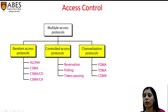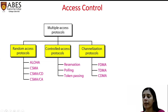In lecture four, we will discuss the various access control protocols, categorized into three categories: random access, controlled access, and channelization protocols. These include ALOHA, CSMA, CSMA/CD, CSMA/CA, reservation, polling, token passing, FDMA, TDMA, and CDMA — all techniques to control access of a shared channel among devices.